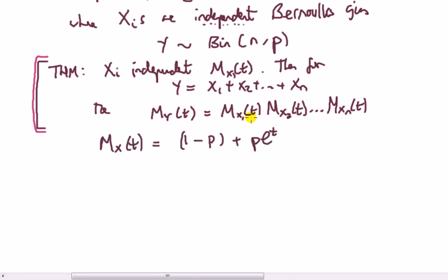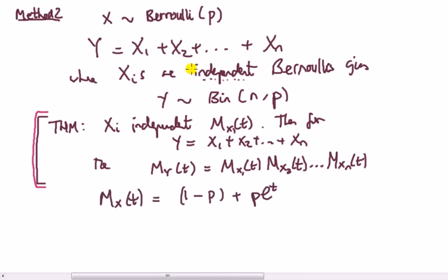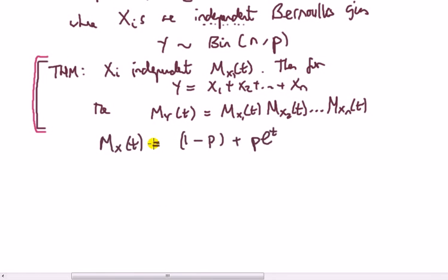So I could have said they're independent, identically distributed. All right, therefore we just say that my(t), which is the MGF of a binomial, is just...